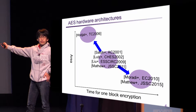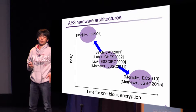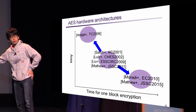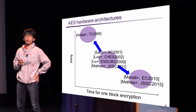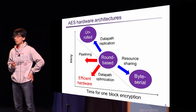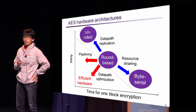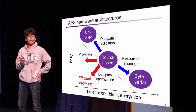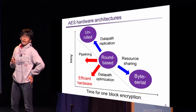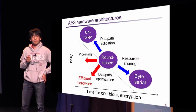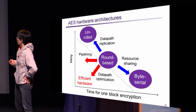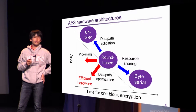Round-based architectures are the most standard and efficient architecture because this architecture uses inherent parallelism of AES. On the other hand, byte serial and unrolled architectures are used for especially compact and low-latency applications. In other words, we can obtain compact architecture by sharing resources of round-based data paths, and we can obtain low-latency architecture by replicating data paths. High throughput-per-gate ratio is a very important feature because hardware efficiency leads to low energy encryption and reduction of chip fabrication cost.